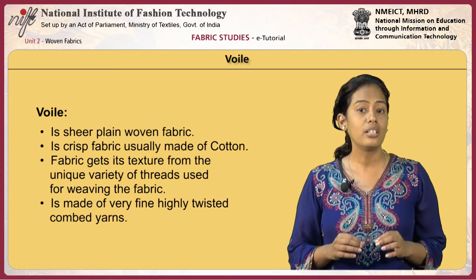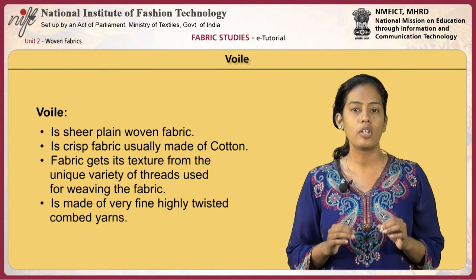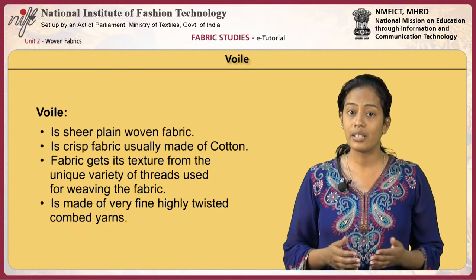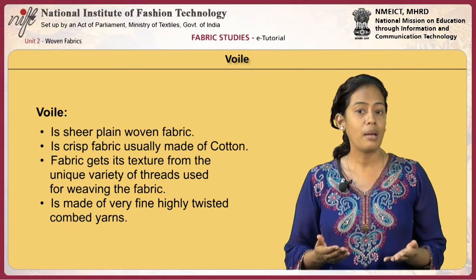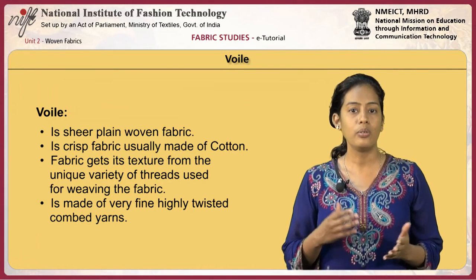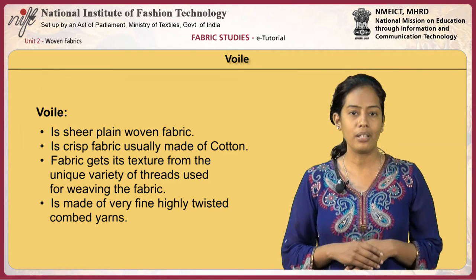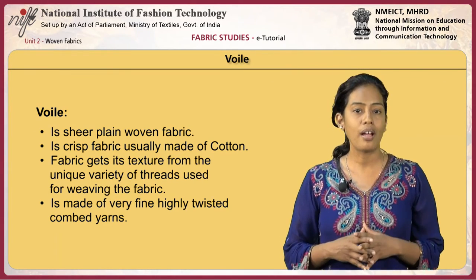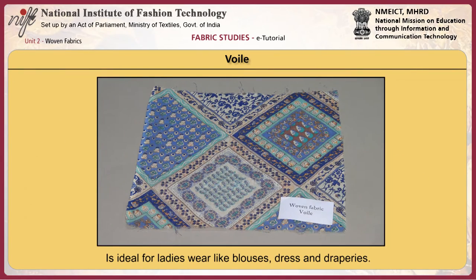Voile is a sheer plain woven fabric. It is a crisp fabric usually made of cotton, though nowadays made in different fibre contents. The fabric gets its texture from the unique variety of yarns used for weaving. It is made of very fine, highly twisted combed yarns. The sheer cotton texture makes it ideal for ladies' wear like blouses, dresses and for draperies.